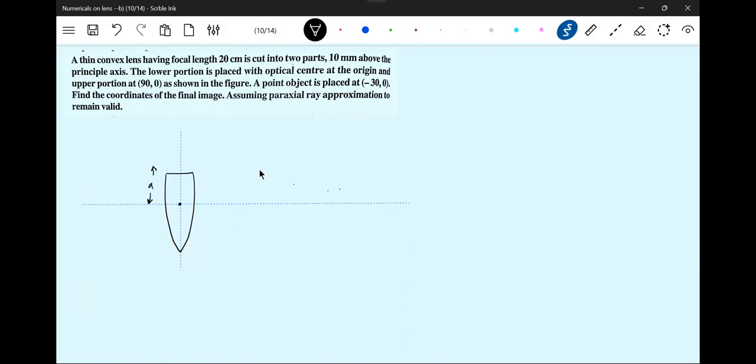The upper portion is at 90 centimeters, this part is at minus 30. Fine, find the coordinates of the final image, assuming paraxial approximation remains valid.